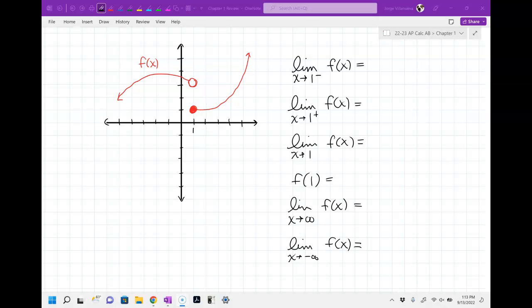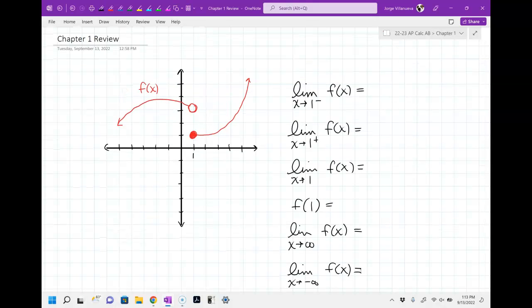All right, so the very first question, like I said on your test, is going to be something like this. And we're just kind of looking at what values do we get. So if I look at the very first one, the limit as x approaches one from the left, what would that be?